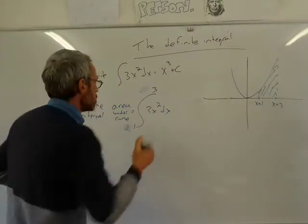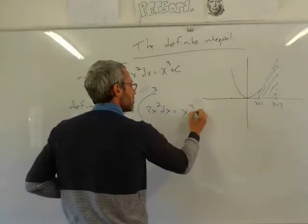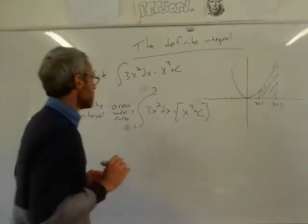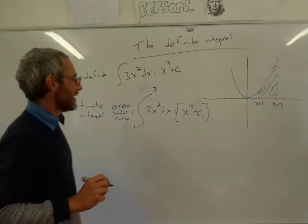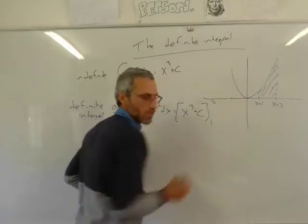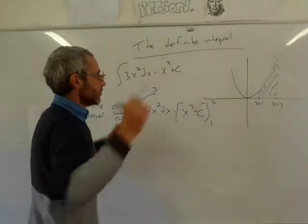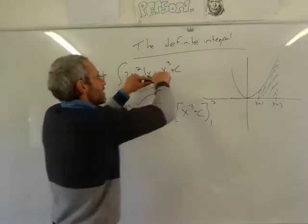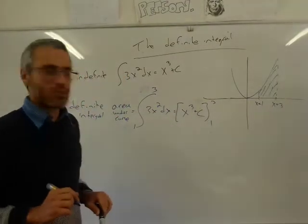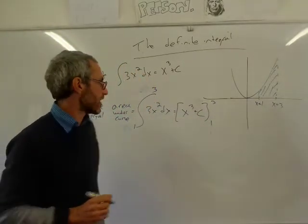So what we do is start exactly the same way — we're going to write x cubed plus c. But now we substitute 1 and 3 into the function. Normally we write the values on the other side. If the answer for the indefinite integral is a function with an x, the answer for the definite integral is actually a number, because we substitute these two values.